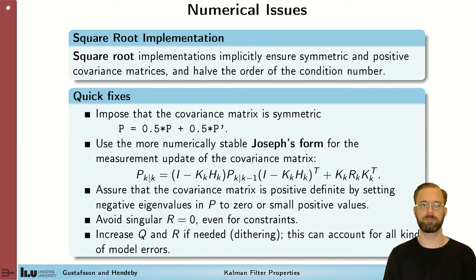Numerical issues sometimes occur. And the very best way to actually deal with this is square root implementation of the Kalman filter. The square root implementations implicitly ensure symmetricity and positive definiteness of the covariance matrix, which can be a problem, and at the same time halves the order of the condition number in the P matrices, also improving the numerical properties.